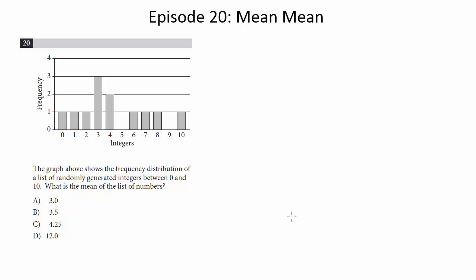The graph above shows the frequency distribution of a list of randomly generated integers between 0 and 10. What is the mean of the list of numbers?